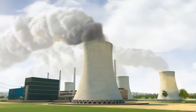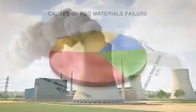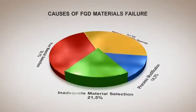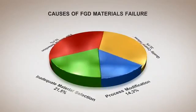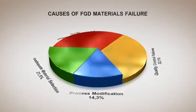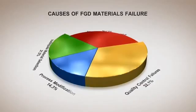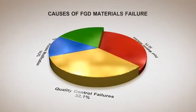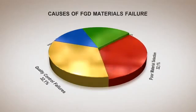The failure of these components, known as spray banks, as well as harming the environment, also leads to system shutdowns with subsequent negative effects on profits. According to a study carried out by Sargent and Lundy in 2003, failures in FGD systems are caused by 21.5% inadequate material selection, 14.3% process modification, and 32.1% quality control failures. This proves that a significant number — approximately 32.1% of failures — are due to poor material selection.